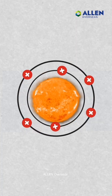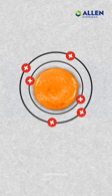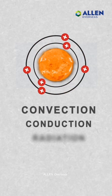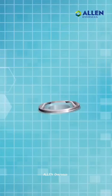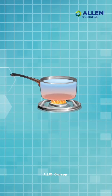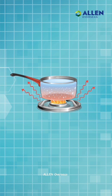Heat can be transferred from one object to another by either convection, conduction or radiation. When heat is transferred between objects by direct contact it is called conduction. When it is done within a fluid it is known as convection, and when electromagnetic waves transfer it, it is known as radiation.